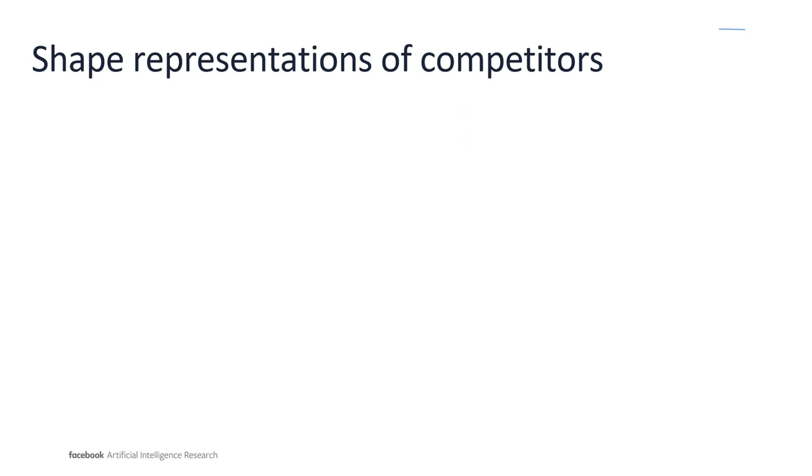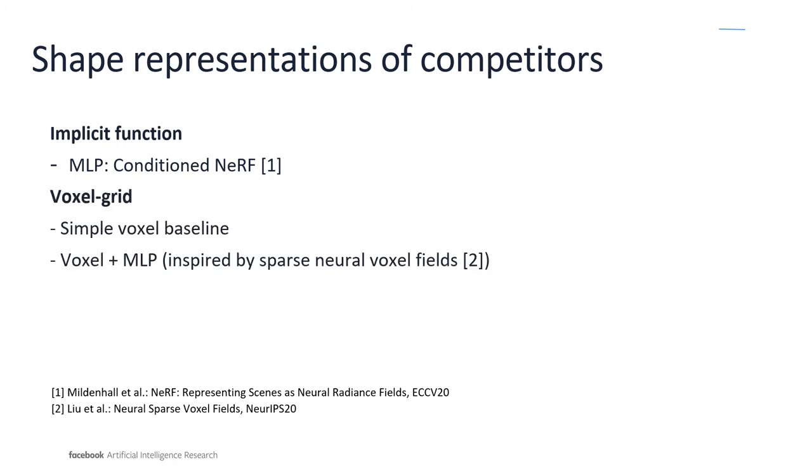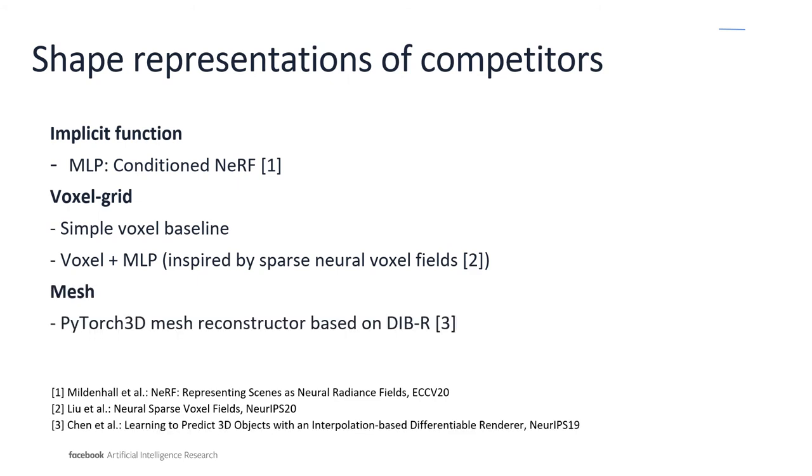We evaluate our method against baselines that make use of different shape representations. The first competitor is a conditioned form of NeRF. Secondly, we compare to two voxel baselines, where the first one is based on a simple voxel grid, while the second one uses a local MLP that is conditioned on voxel features. And lastly, we compare to a mesh baseline inspired by DIBR.